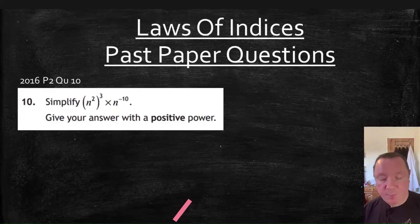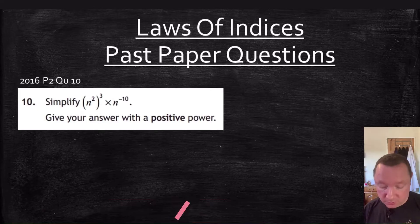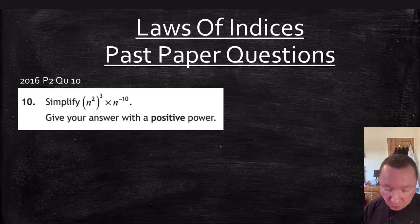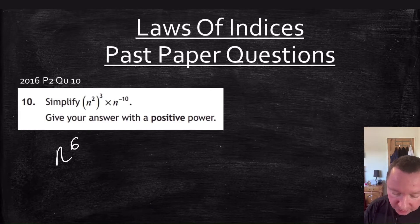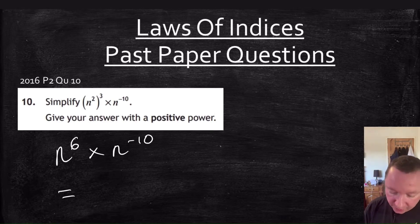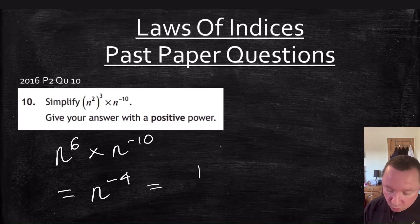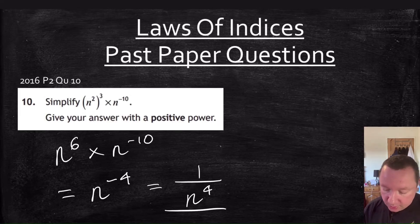2016 paper, question 10: simplify n squared, cubed, times n to the minus 10. Give your answer as a positive power. Start with n squared cubed — that gives 2 times 3 equals 6 — so n to the 6, times n to the minus 10. Adding the powers: 6 plus minus 10 is negative 4. The answer as a positive power is 1 over n to the 4.